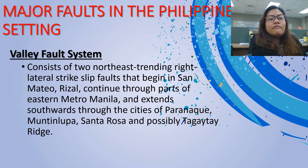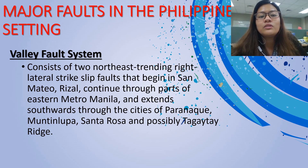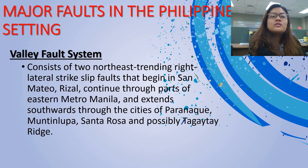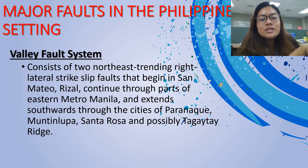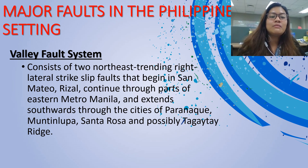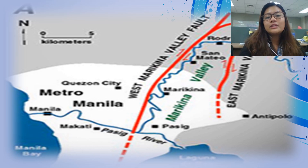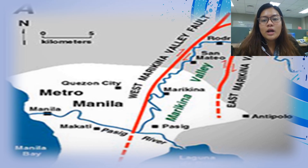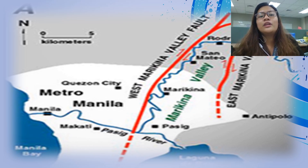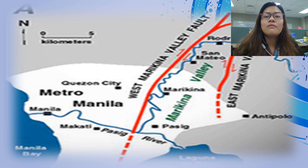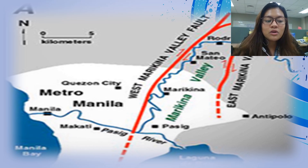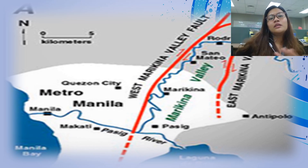One of the major faults of the Philippines is the Valley Fault System or the West Valley Fault. It consists of two northeast-trending right-lateral strike-slip faults that begin in San Mateo, Rizal, continue through parts of eastern Metro Manila, and extend southwards through the cities of Parañaque, Muntinlupa, Santa Rosa, and possibly the Tagaytay Ridge. This is the West Marikina Valley Fault, which earthquake scientists say could cause 'the big one' — a major earthquake — because it is one of the active fault lines. Though it currently has no movement, its activity suggests it may have a rupture, which is why everyone is preparing for the big one.